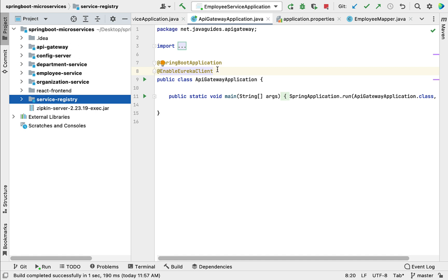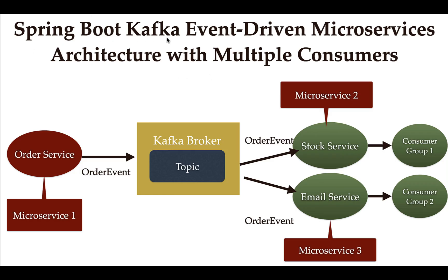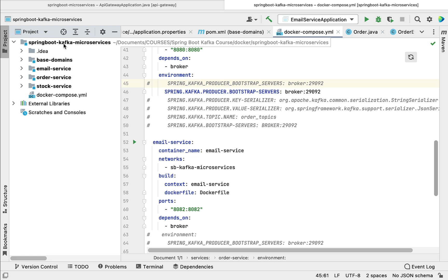Apart from the main project, we are going to create two more projects. The second project is Spring Boot Kafka Microservices, where we will implement a Spring Boot Kafka event-driven microservices architecture with multiple consumers. We will create microservices such as order service, stock service, and email service, using Kafka as a message broker for asynchronous communication between these microservices.